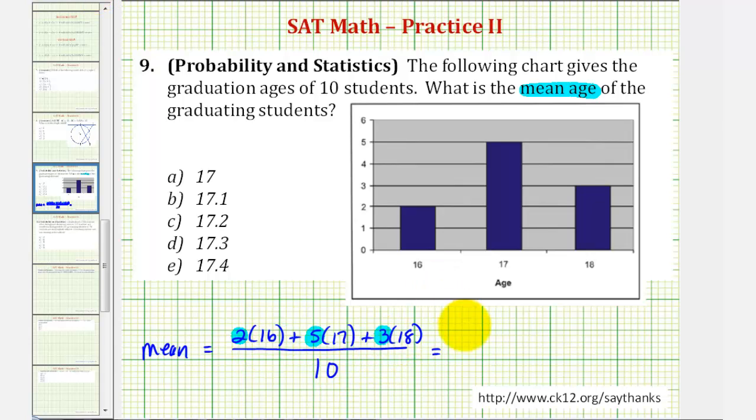Well, two times sixteen is thirty-two, five times seventeen is eighty-five, and three times eighteen is fifty-four. I'm going to divide this by ten.